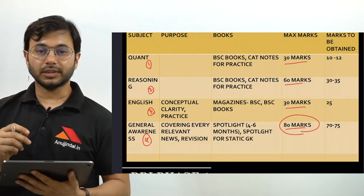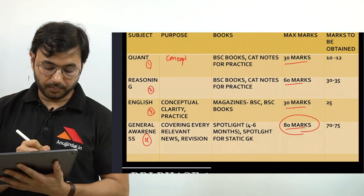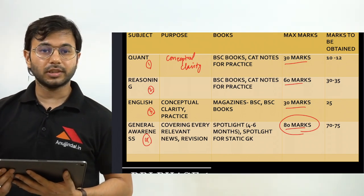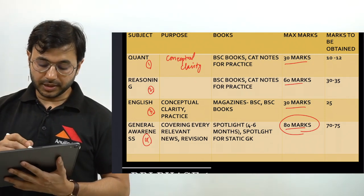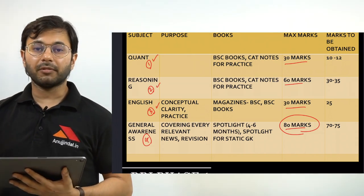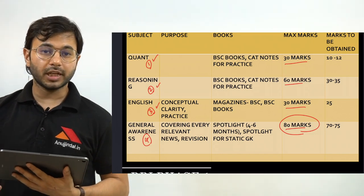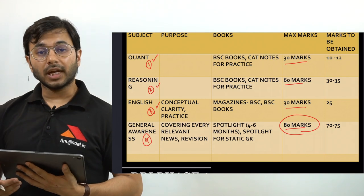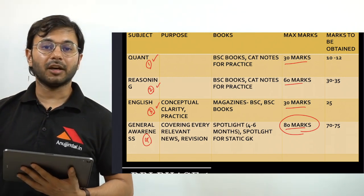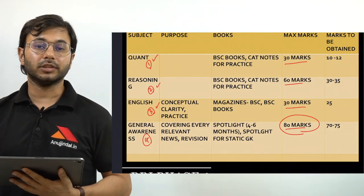That makes General Awareness the most important section. For Quant, the focus has to be only on conceptual clarity — if your concepts are clear, it's very easy to apply common sense and answer the questions. Before telling you about the books, let me clarify that for Quant, Reasoning and English, videos have become more popular and effective than books. Books have not stayed up to date and the concepts, shortcuts and rules provided in them have become obsolete. Books can be used only for practicing; for understanding concepts, it's better to use YouTube.